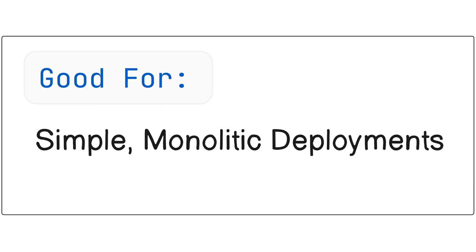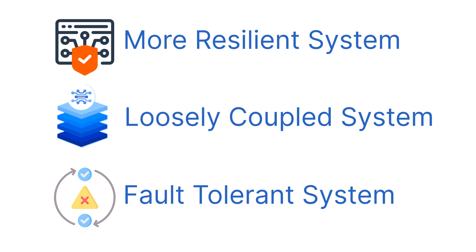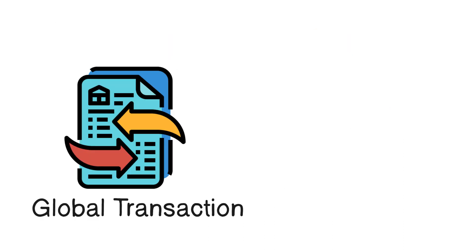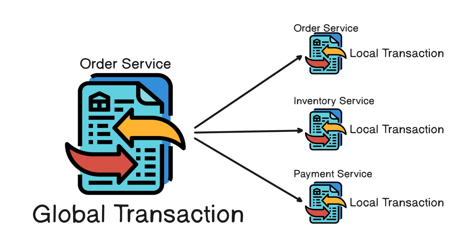While this works fine for simple monolithic-like deployments, in real-world distributed environments with network delays, service outages, and independent deployment cycles, this is not possible. So we need an approach that is more resilient, loosely coupled, and fault tolerant. The order service creates a single big global transaction spanning across multiple service calls. What if we break that single big transaction into multiple small and locally manageable transactions?